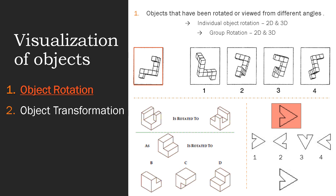Let's see individual object rotation with a few examples. In the first question, they are asking us to find which of the shapes on the right is the rotated version of the exact shape on the left — finding the rotated version of the question figure. This is the first type of question under object rotation.